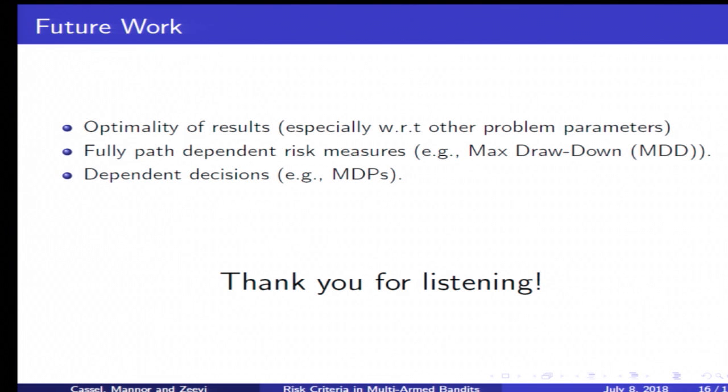In the future, we would like to see if the results are optimal, especially with respect to other problem parameters like the number of arms. Also we might want to consider fully path dependent risk criteria—for example, like drawdown. Since the empirical distribution is invariant to permutations, essentially we can only consider risk measures that don't account for the order in which we receive the rewards. And finally, maybe dependent decisions like in Markov decision processes.